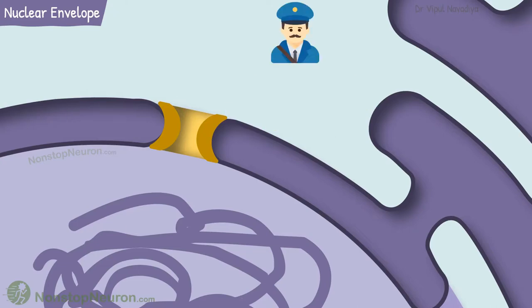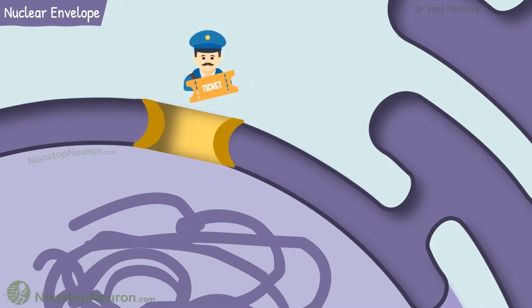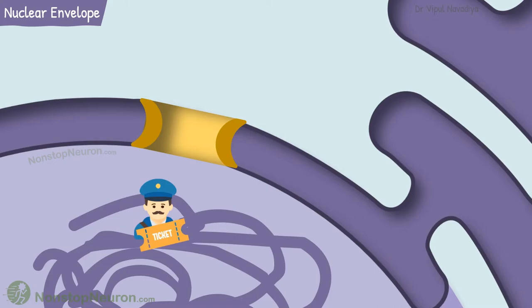They provide selectivity to what can pass through the pore and what cannot. To pass through, the protein must have a ticket. This ticket is called nuclear localization sequence. Under the resting condition, the pore complex forms a narrow channel. The diameter of this channel is about 9nm. It prevents the passage of proteins larger than 60 kD. But when a protein with ticket comes, it dilates. This allows the passage of protein.